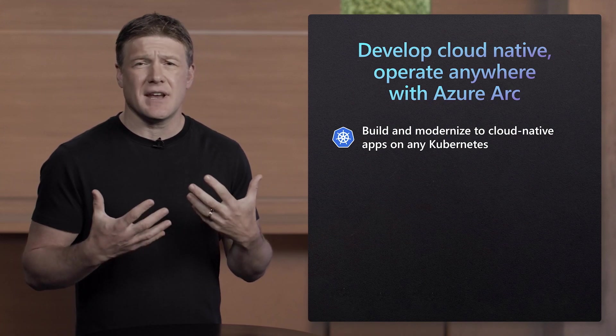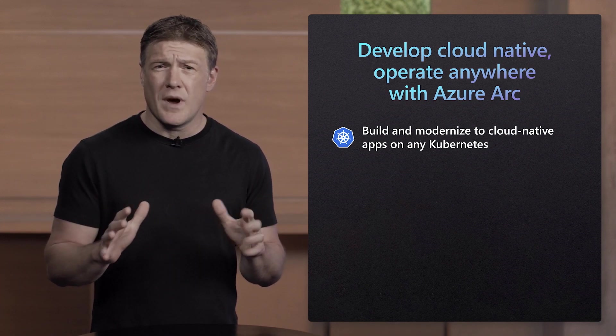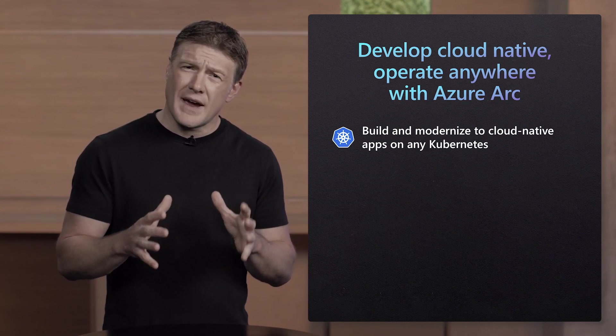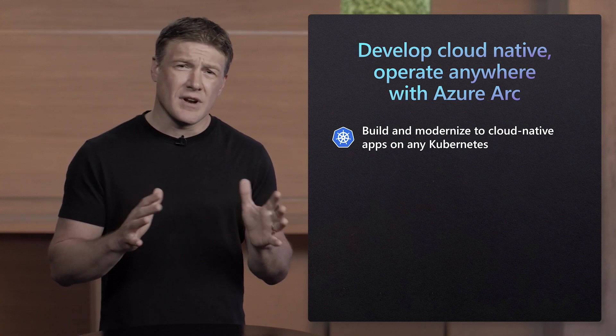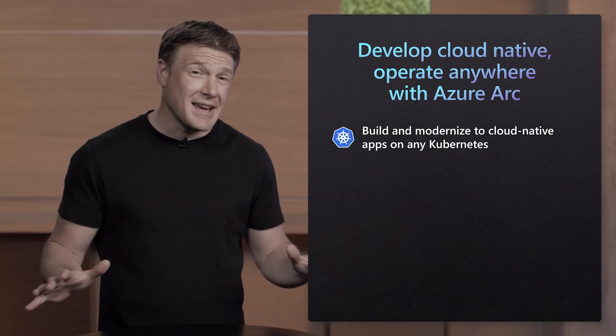You've told us that you have workloads that need to run outside of the public cloud, in your own data centers and at the edge — workloads that you can manage effectively with cloud native tools and services. With Azure, we help you write apps once and run them wherever you need using a cloud-centric approach. Kubernetes has become such an integral part of the cloud native world. With Azure Arc, our goal is to ensure we don't get in the way of your bet with the Kubernetes ecosystem. You can write to the same application service APIs that run consistently on premises, across multiple clouds, and in edge environments on any Kubernetes platform.